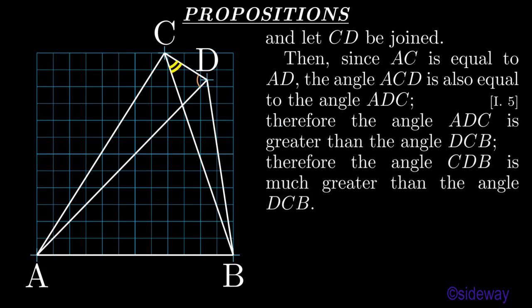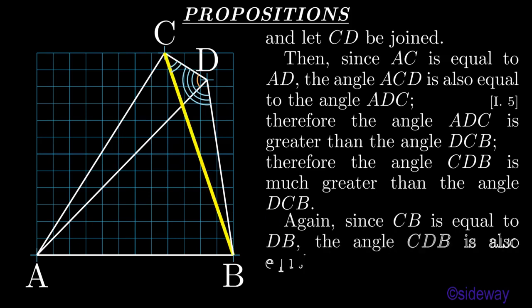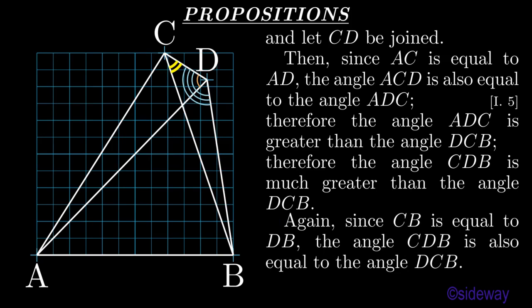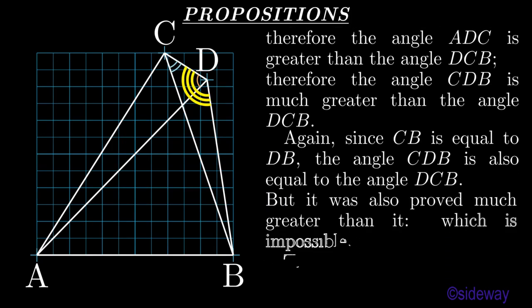Therefore the angle ADC is greater than the angle DCB. Therefore the angle CDB is much greater than the angle DCB. Again, since CB is equal to DB, the angle CDB is also equal to the angle DCB. But it was also proved much greater than it, which is impossible. Therefore, what was to be shown.